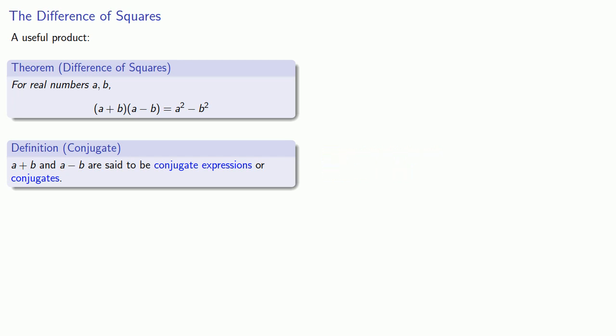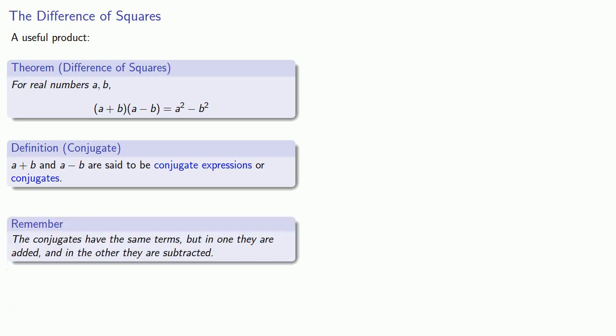Remember, definitions are the whole of mathematics — all else is commentary. One easy way to remember what a conjugate is: the conjugates have the same terms, but in one they're added and in the other they're subtracted.